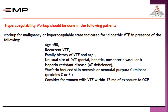For whom should hypercoagulability workup be done? Workup for malignancy or hypercoagulability state is indicated for idiopathic venous thromboembolism in the presence of: age below 50, recurrent venous thromboembolism, family history of VTE especially at young age, unusual DVT sites like portal vein, hepatic vein, or mesenteric vein thrombosis, heparin resistance (suspect antithrombin deficiency), warfarin-induced skin necrosis, or patients — particularly women — with VTE within 12 months of starting oral contraception.